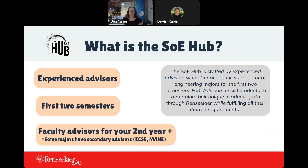So what is this SOE hub? We are professional advisors in the school of engineering. We will advise you for your first two semesters or your first year here at RPI. You will also get faculty advisors coming in on your second year at RPI. Some of the majors have secondary advisors in addition to faculty advisors. ECSE stands for electrical and computer systems engineering. Being part of the department, you have a faculty advisor plus a secondary advisor to help you with all things advising.